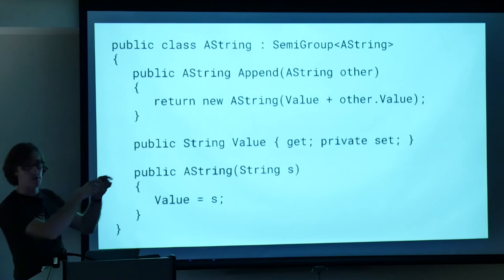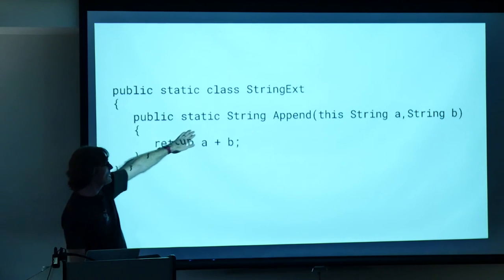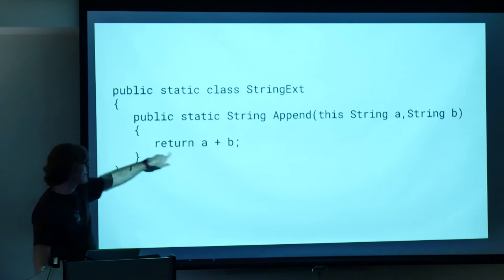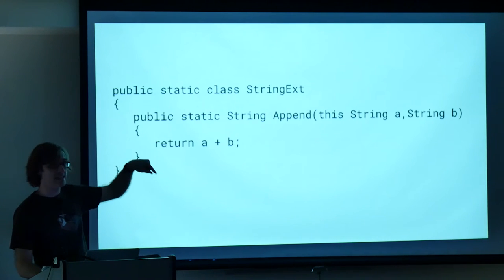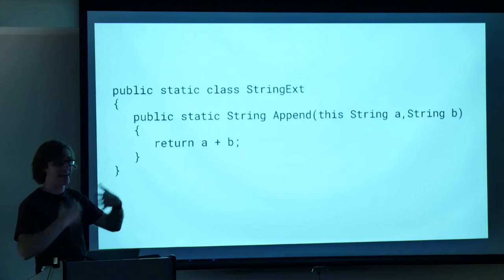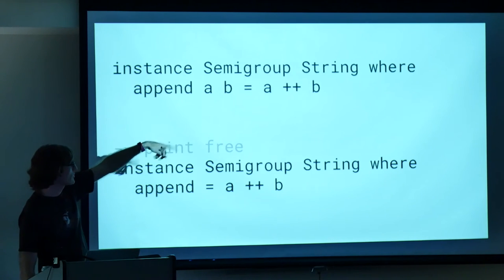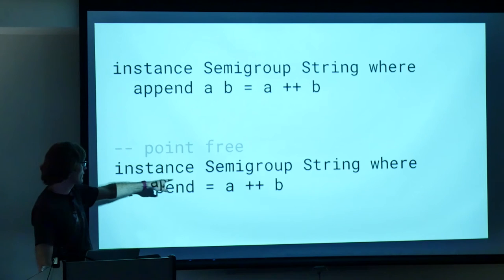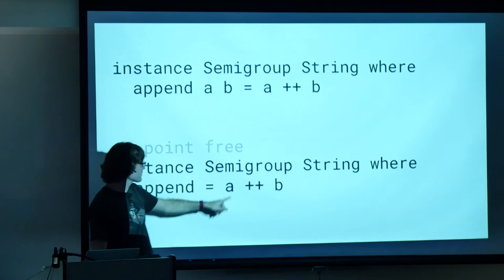And if we were to implement this for a specific type, say string, we could do something like this, where our append function takes some other string. Now we can't just make string implement this interface, so we have to make up a new type that implements the interface that kind of wraps the string. And we could have an append that takes another one of these strings and during the append it just takes the two strings inside and appends them to each other using plus. And here's our constructor that just takes the string and sticks it inside. And there's our getter. Is this making sense so far?